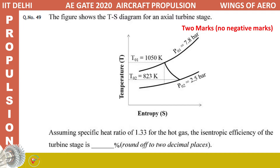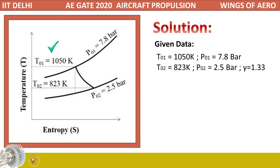The first question: the figure shows a TS diagram for an axial turbine. Assuming specific heat ratio of 1.33 for the hot gas, find the isentropic efficiency of the turbine stage as a percentage rounded off to two decimal places. This is a two-mark question with no negative marking. Given data: T01 = 1050 K, pressure = 7.8 bar, T02 = 823 K, P02 = 2.5 bar, and gamma = 1.33.